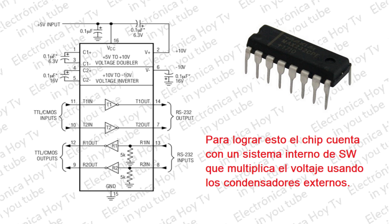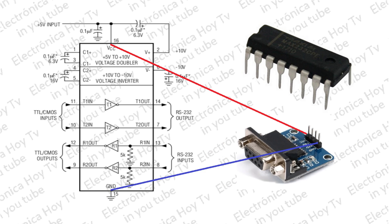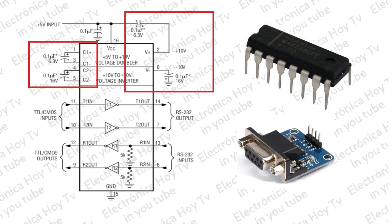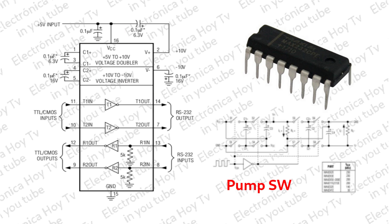Por esta razón, no se necesitan fuentes adicionales de más menos 25 voltios, sino que esto se hace con la adición de condensadores externos al chip usando la configuración de las bombas de carga. Esto es de mucha utilidad para la implementación de los puertos serie RS-232 en dispositivos que tengan una alimentación simple de más 5 voltios.